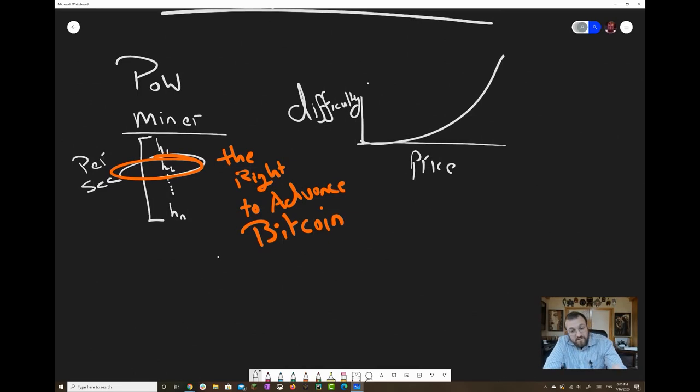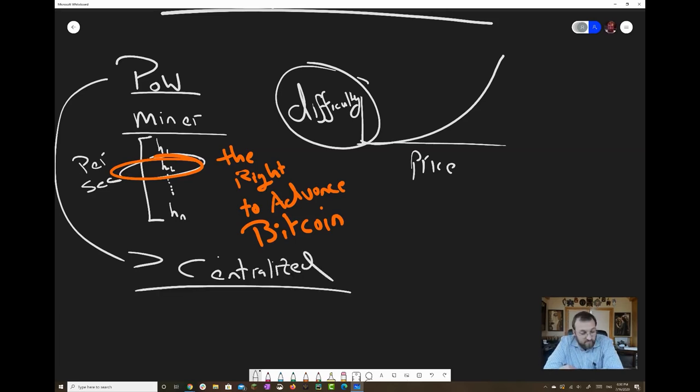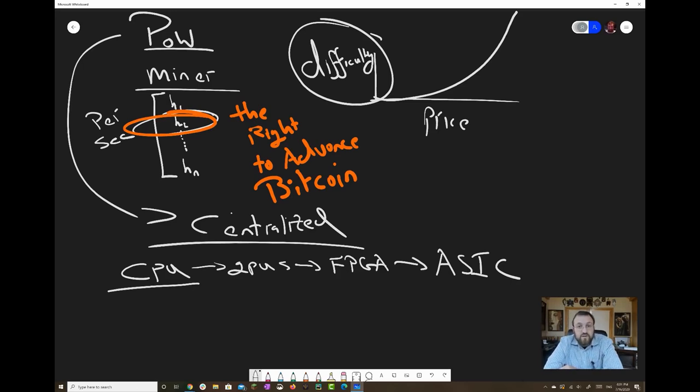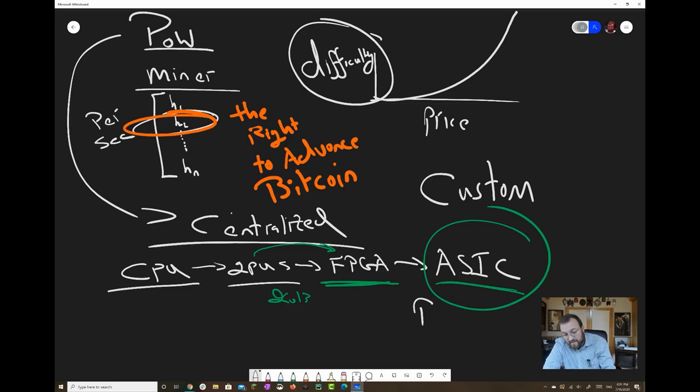Now here's the problem. As difficulty goes up, proof of work gets more centralized, and this is unavoidable. Why? You have to go from CPUs to increasingly more specialized hardware. Anybody can buy a CPU—your price of admission is very low there. That's Intel, AMD, ARM, etc. Anybody can buy a GPU—Nvidia, AMD, they're in pretty good circulation. But when you start getting to increasingly more specialized things like FPGAs or ASICs, these are custom.